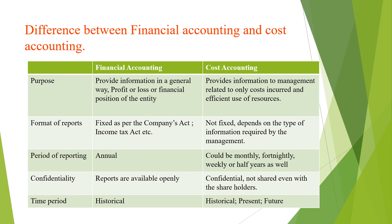The time period for financial accounting: transactions recorded are mostly historical — after the transaction takes place, you record it, so financial accounting data is historical. Whereas under cost accounting, it includes historical data, the present, as well as the future. Whenever you are creating budgets or making estimates, it is futuristic. These were the main differences between financial accounting and cost accounting.